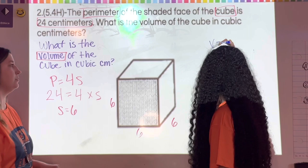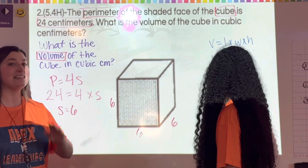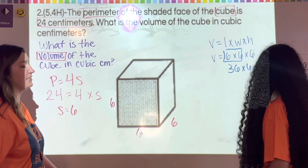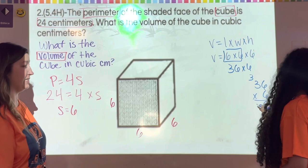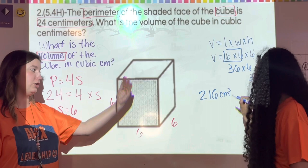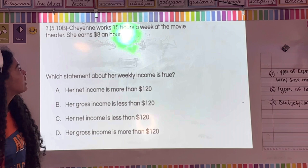Now I can solve for volume. The formula is V = length × width × height. My length is 6, width is 6, and height is 6. Six times six is 36, and 36 times 6: six times six is 36, six times three is 18 plus 3 is 21, so my volume is 216 cubic centimeters.